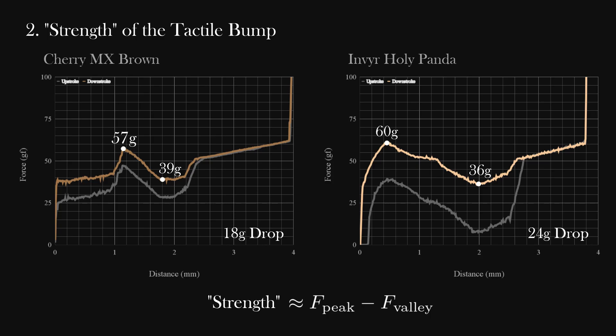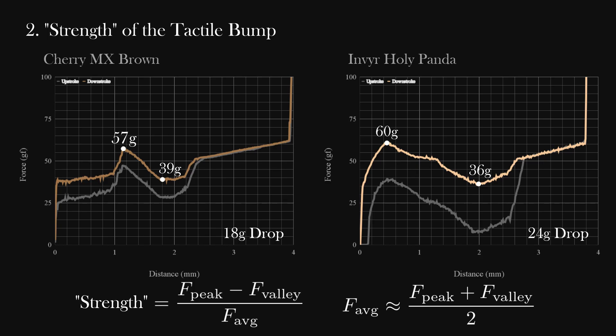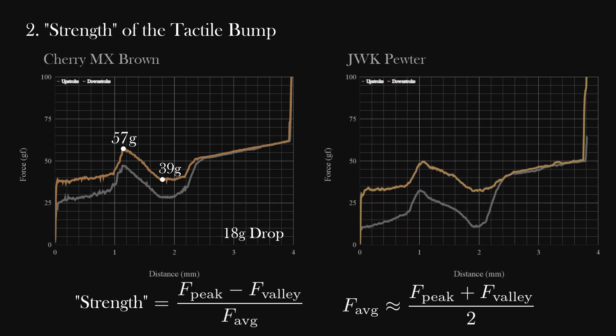However, sometimes a tactile bump seems weaker when we put in a stronger spring. So how do we account for that? I would think we can account for this by dividing the difference between the peak force and the lowest force by the average force during the tactile drop, which can be approximated by the average force between the peak force and the lowest force. Take a look at Cherry Mix Browns versus Pewters. Many claim that Pewters have a bigger bump despite the drop being around the same. But if we divide it by the average force during the drop, we see that Pewters have a higher value corresponding to a stronger bump.